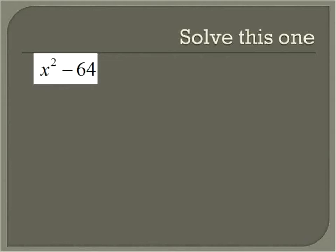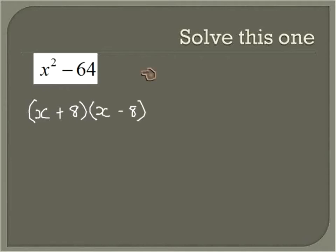Quick recap on factoring the difference of squares. If you have a perfect square minus another perfect square, you take the square root of the first term plus the square root of the second term, and you multiply that times the square root of the first term minus the square root of the second term. And that's how we factor a difference of squares.